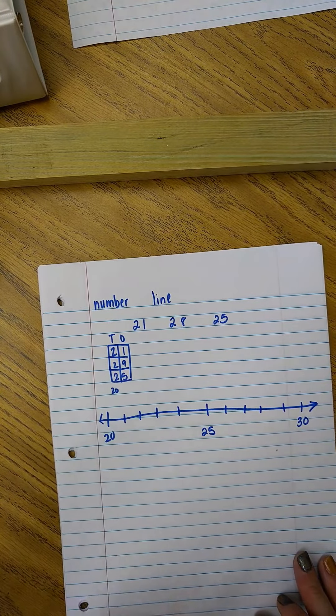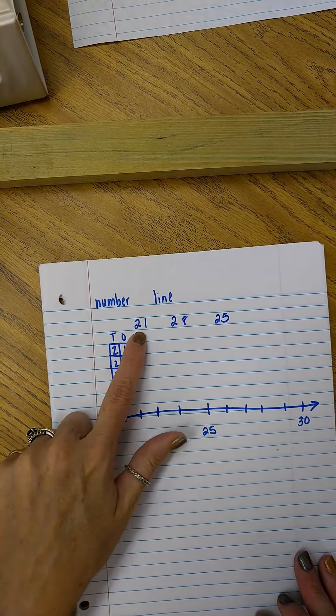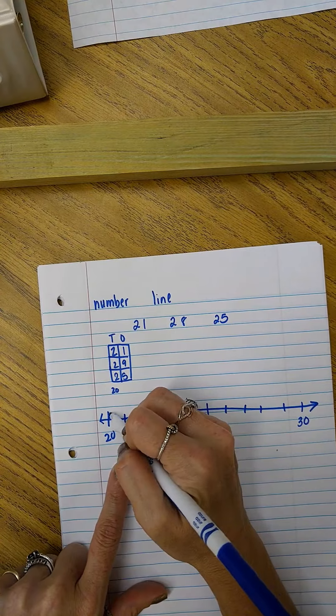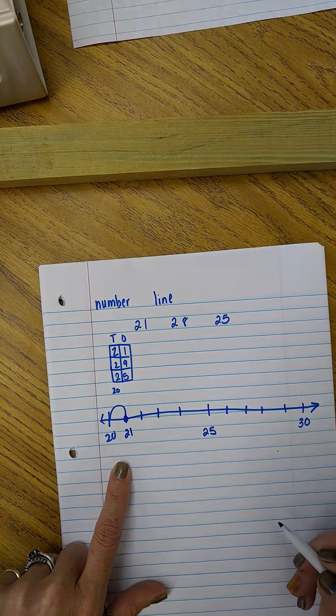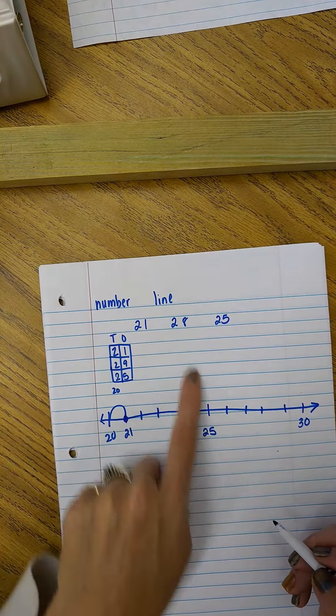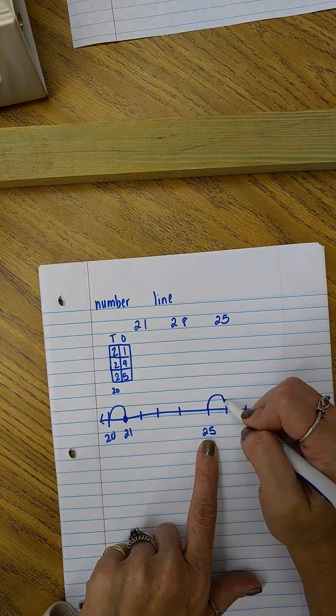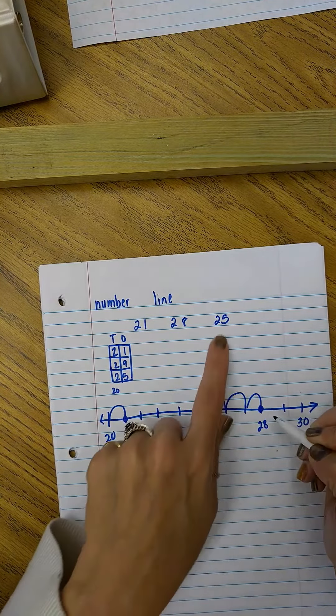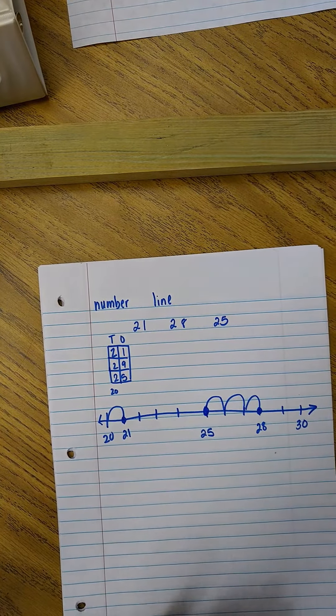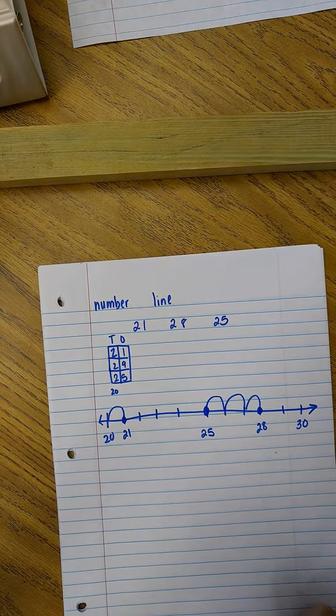Now I'm going to plot my numbers on the number line. This is 21. 21 is one jump from 20. And I'm only going to label that one. Then I have 28. Here's 25, 26, 27, 28. And I label it. And then I have 25, which is already labeled. So I put my numbers on there.